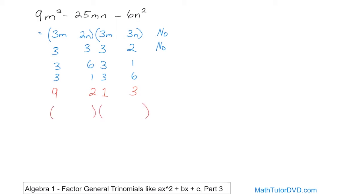Now I'll put my parentheses back in place and write everything properly. 9m and 1m. This is 2n and this is 3n — I have to put the variables back in place. Now I've got to arrive at my signs. I need a negative 6n squared, so one of these needs to be plus and one needs to be minus. And I also want a negative on the inside. So I'm going to put a negative here and positive here. This will give me positive 2mn. This will give me negative 27mn. So negative 27 plus 2 gives me negative 25. This is the right answer: 9m plus 2n, times m minus 3n.